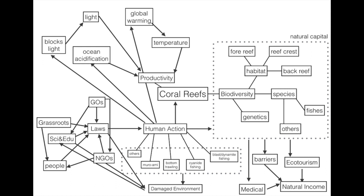Bottom trawling is a fishing technique that uses a trawl dragged across the sea floor. There is cyanide fishing, which involves spraying a sodium cyanide mixture into the desired fish's habitat in order to stun the fish. And there is blast or dynamite fishing, which is a practice of using explosives to stun or kill schools of fish for easy collection. And there are many more.